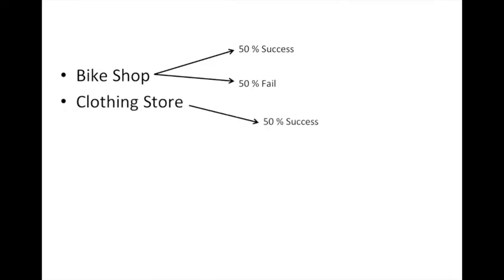The bike shop has a 50% chance of success and a 50% chance of failure, as does the clothing store. However, with the bike shop, if you succeed you could make $400 as we discussed. If you fail, you have the potential to lose $150.